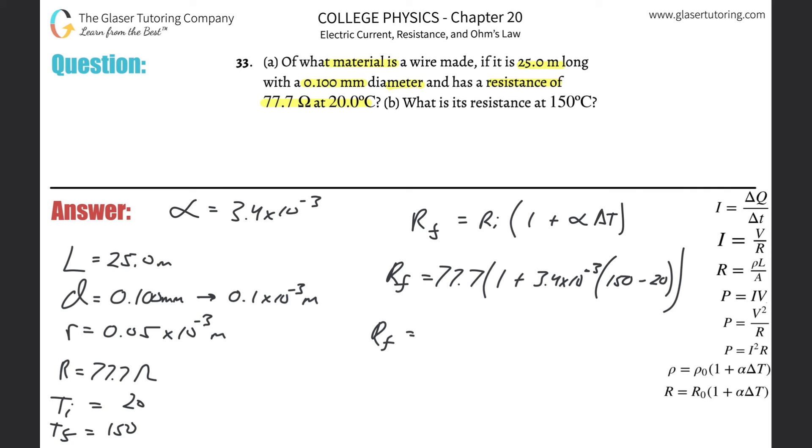And there we go. We take out our handy dandy calculator. And this is nice. Hopefully the test goes this easy. But who are we kidding? That ain't going to happen. So difference there is 130 between the temperature, multiply that by 3.4 times 10 to the minus 3. Take one and add it to it, and then multiply that by 77.7.